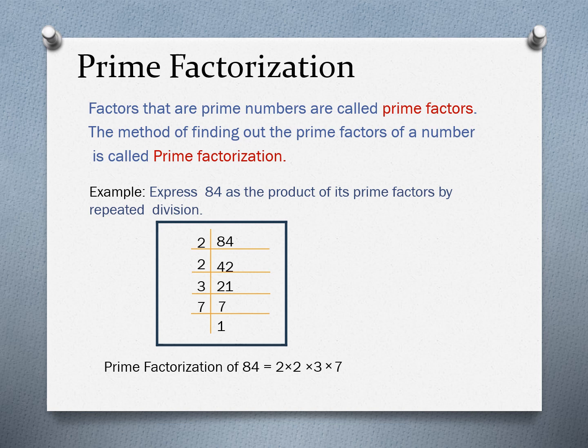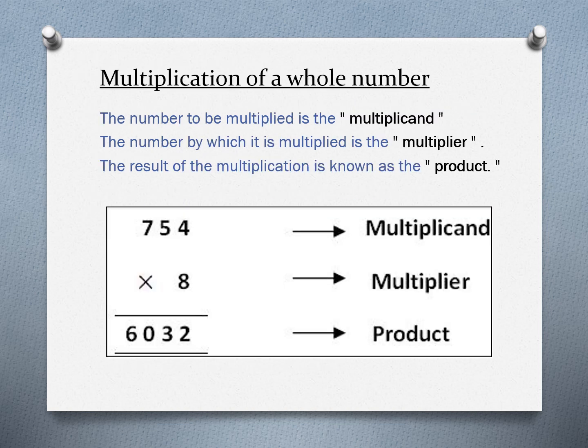84 is an even number, so divide 84 by 2 to get 42. Again, divide 42 by 2 to get 21. Now 21 can be divided by 3, so divide 21 by 3 to get 7. Lastly, divide 7, which is a prime number, by itself to get 1. Therefore, the prime factorization of 84 is equal to 2 × 2 × 3 × 7.